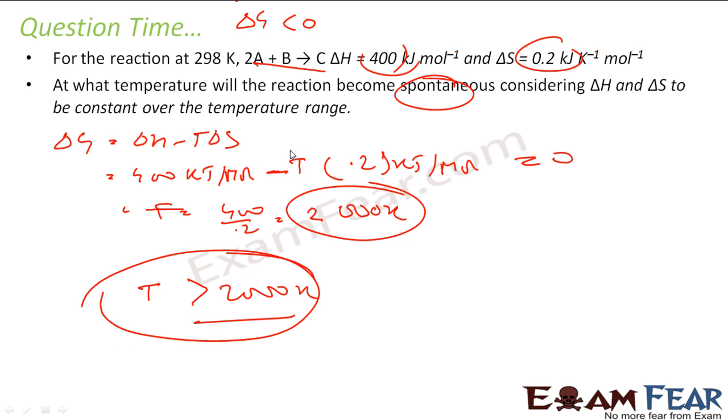Because I need temperature to be very big so that this becomes negative. So if temperature is greater than 2000 K, then my reaction is spontaneous.